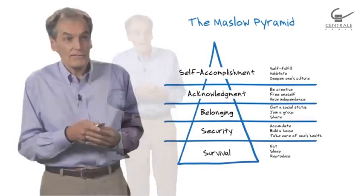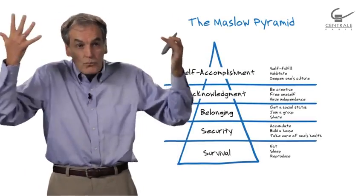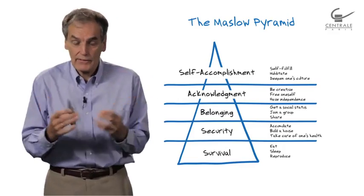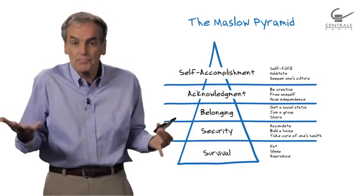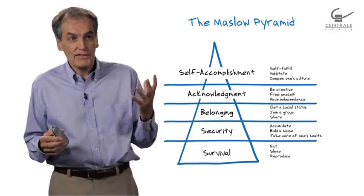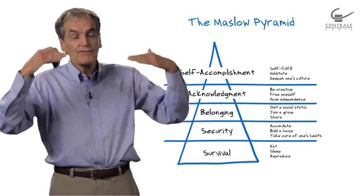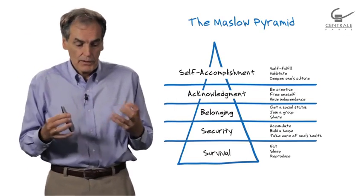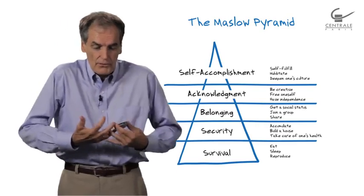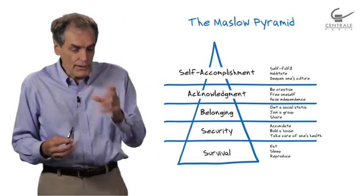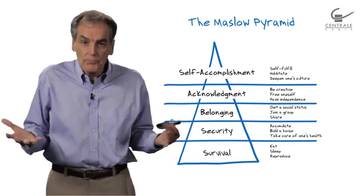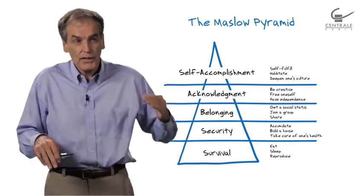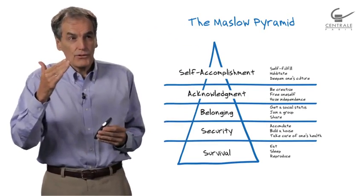One model you can find in psychology is the pyramid of Abraham Maslow. He proposed a way to understand people's wishes, desires, and expectations. He said you have five levels of expectation, going from the bottom to the summit. The first level is the basics - you need to drink, you need to eat. That's level zero. At the first floor, you have security - you want food tomorrow, next month, next year. You want to guarantee the future.